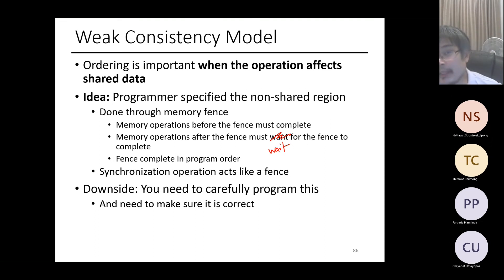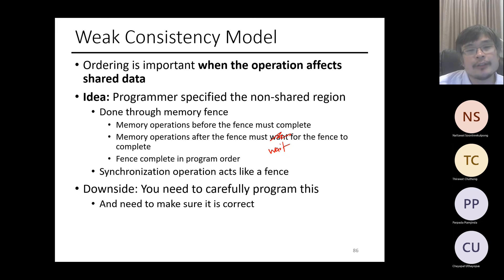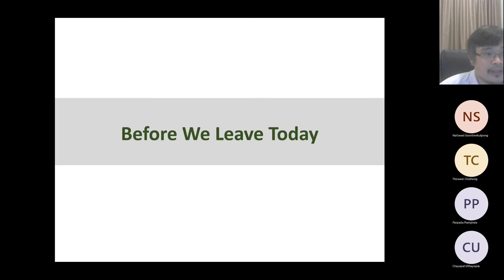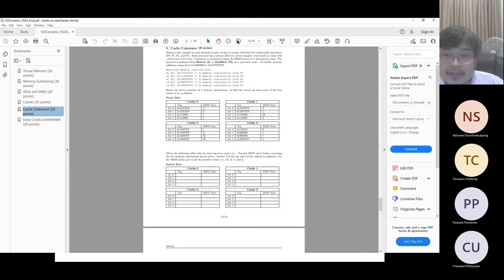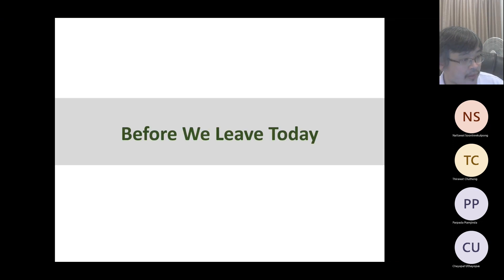The benefit of the relaxed consistency model is that it's faster — you don't apply global ordering every time, just rely on the programmer to insert memory fences where needed. Before we leave today: we won't go through the midterm due to time, but don't forget the sample cache coherence questions on Canvas. That's it for today's lecture.